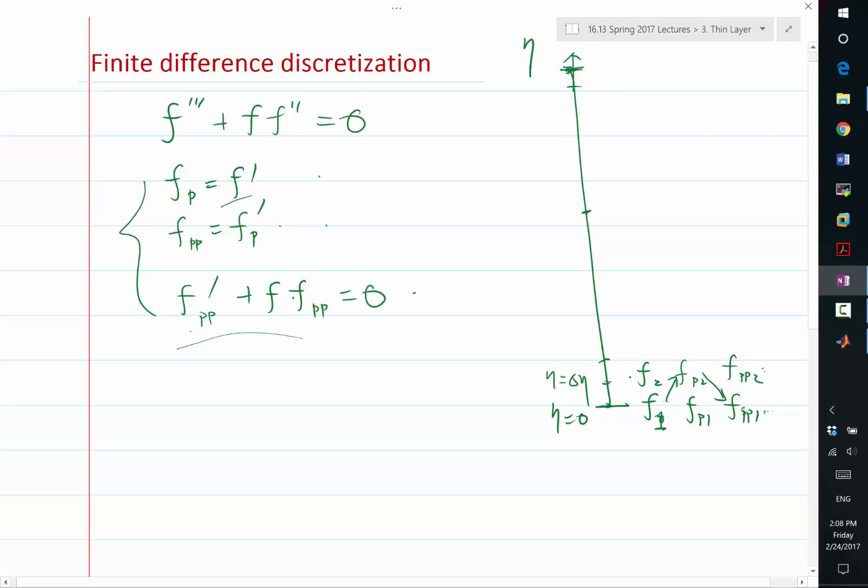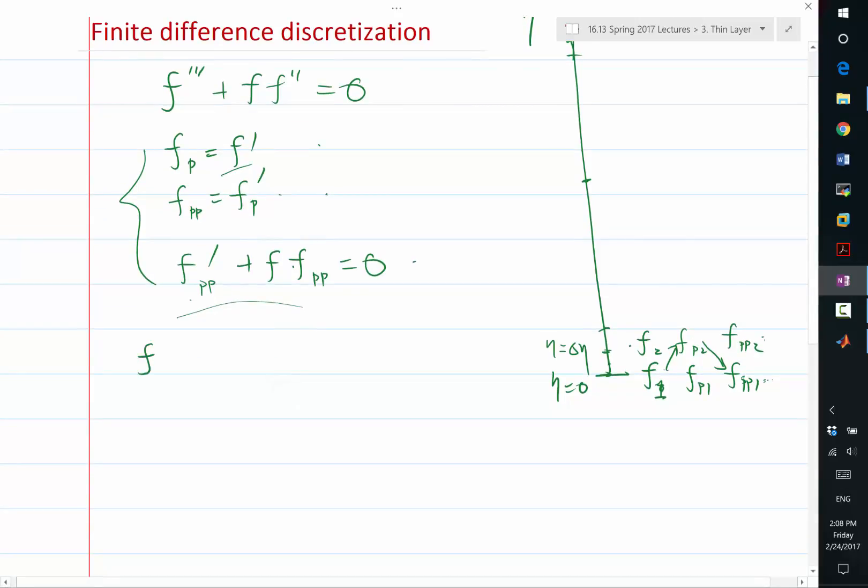So theoretically, it's fine, but there is a better way to discretize it, is to use the central difference, not on integer grid points, but over these half grid points. The advantage is, it provides a tighter coupling between the odd and even grid points. So basically, I can discretize f prime at any grid point i plus half as f i plus one minus f i divided by delta eta.